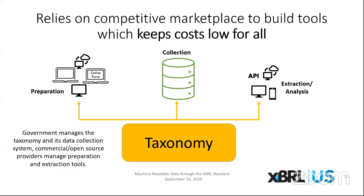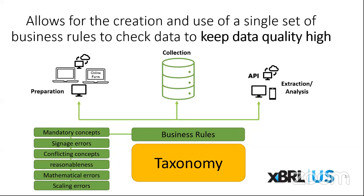Reporting entities and data users can use many different commercial and open source tools because they all reference the same freely available taxonomy. The government entity manages the taxonomy and the data collection system, while commercial and open source providers manage preparation and extraction tools based on that taxonomy, which keeps costs low for everyone. A single set of validation or business rules can be created by the data collector to check potential problems — mandatory concepts, signage errors, conflicting concepts, reasonableness, mathematical errors, or scaling errors — and those rules can be used in preparation tools, the data collection system, and extraction tools.